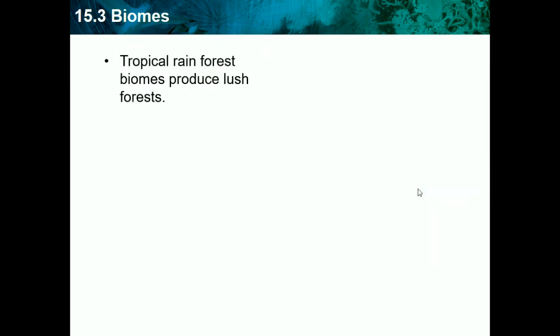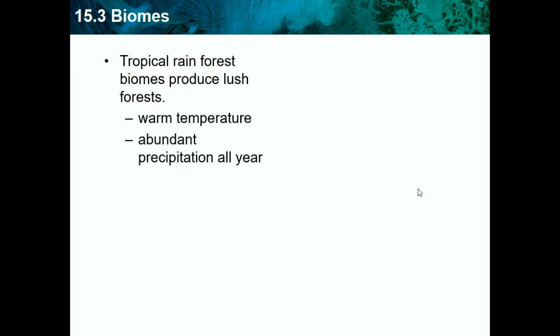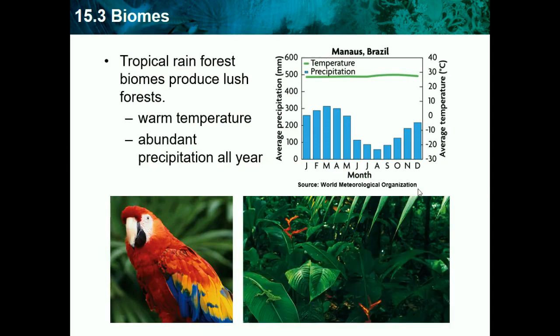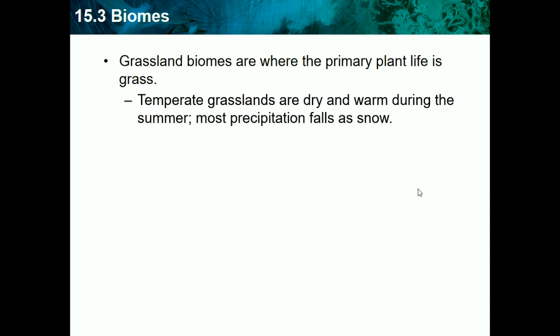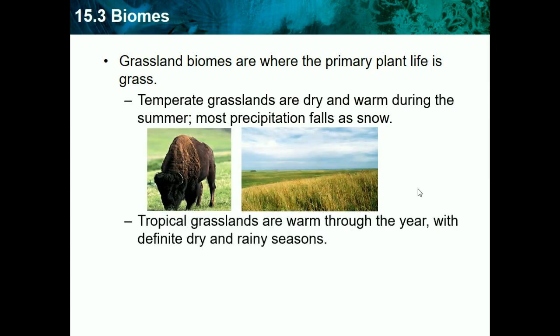Tropical rainforest biomes produce lush forests with warm temperatures and abundant precipitation all year — basically everything we think of when we think of a rainforest. We don't really have to know the specific biomes in depth, but it's good background knowledge. Grassland biomes are where the primary plant life is grass. Temperatures in grasslands are drier and warmer during the summer, with most precipitation falling as snow. Tropical grasslands are warmer throughout the year but have distinct dry and rainy seasons.